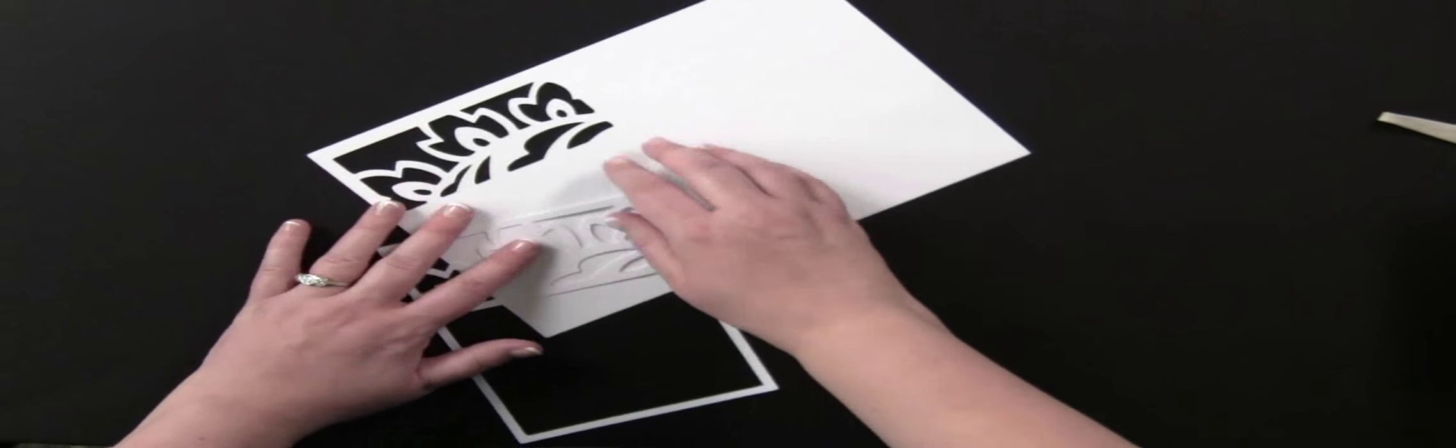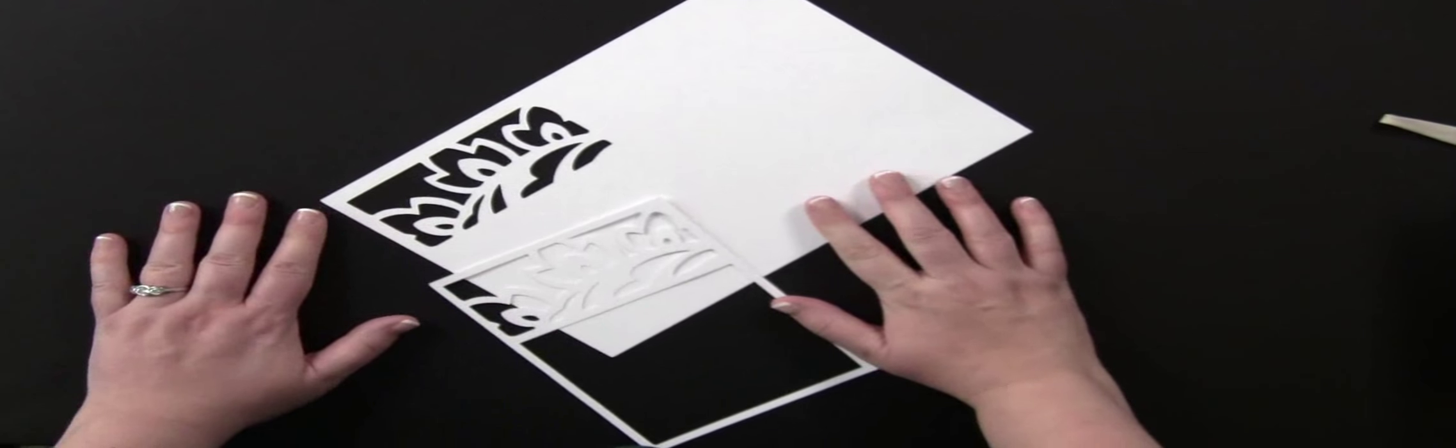So cut these two shapes out, and then next you'll want to score your 5x7 card, and we'll take it from there.